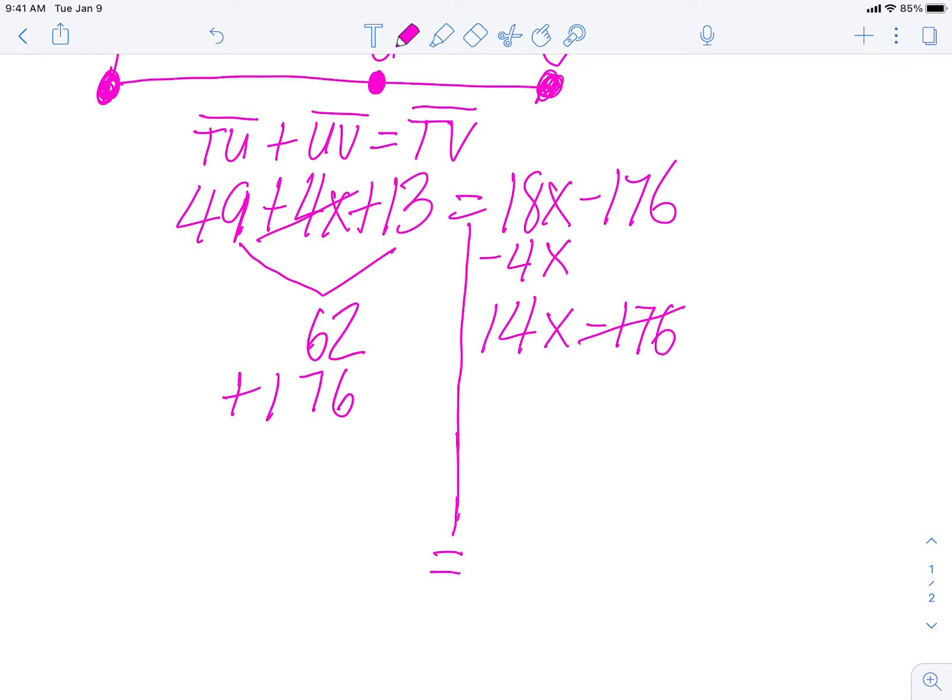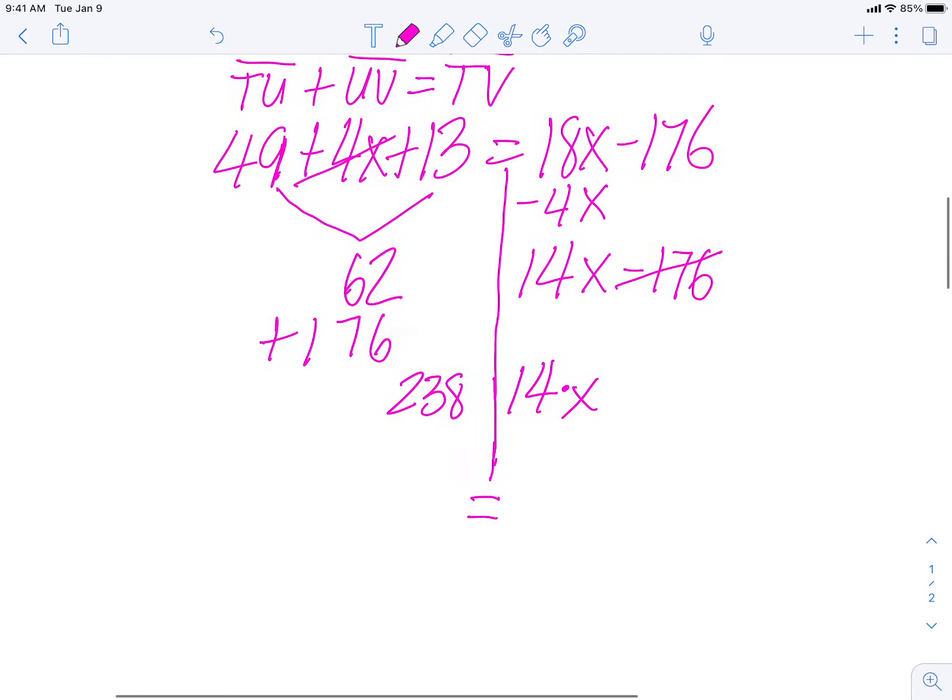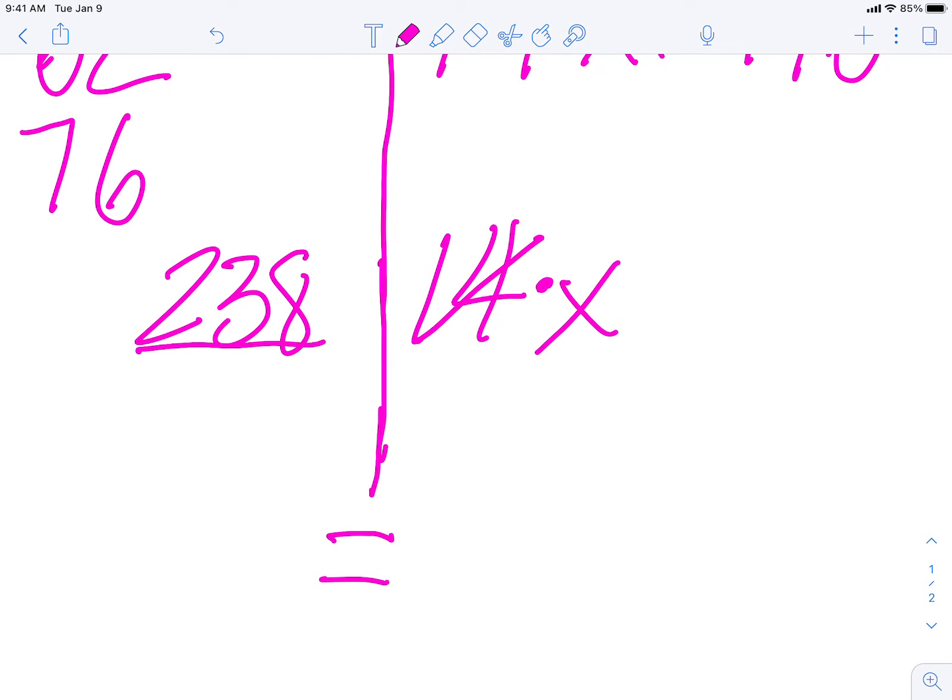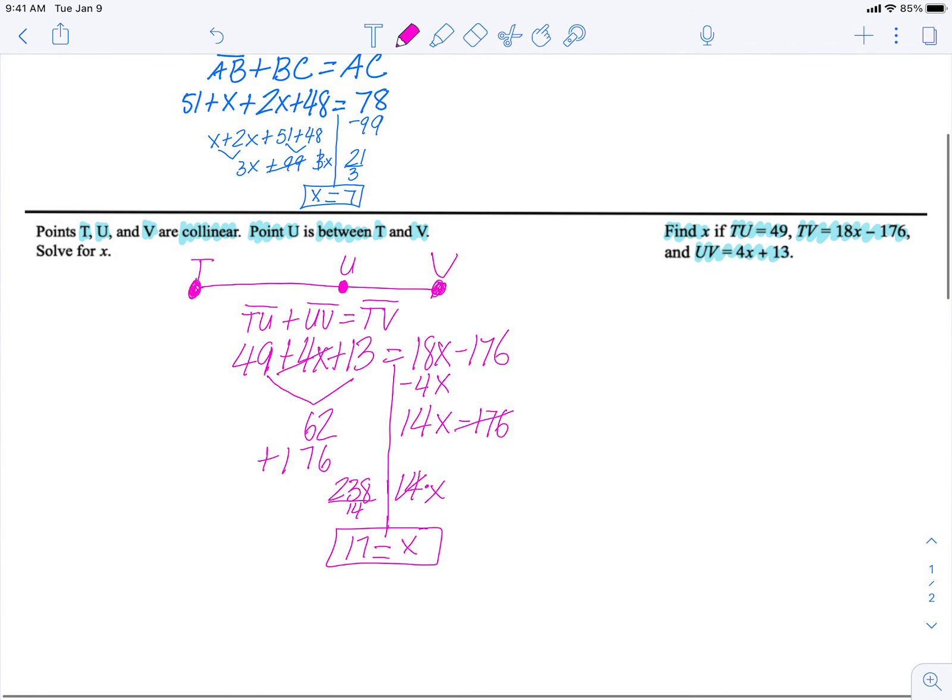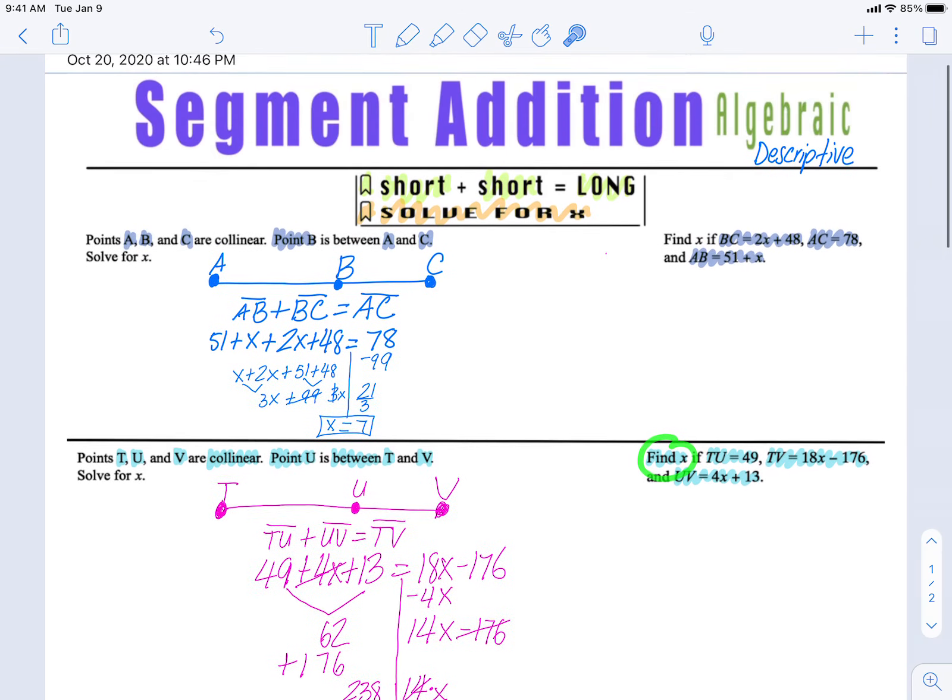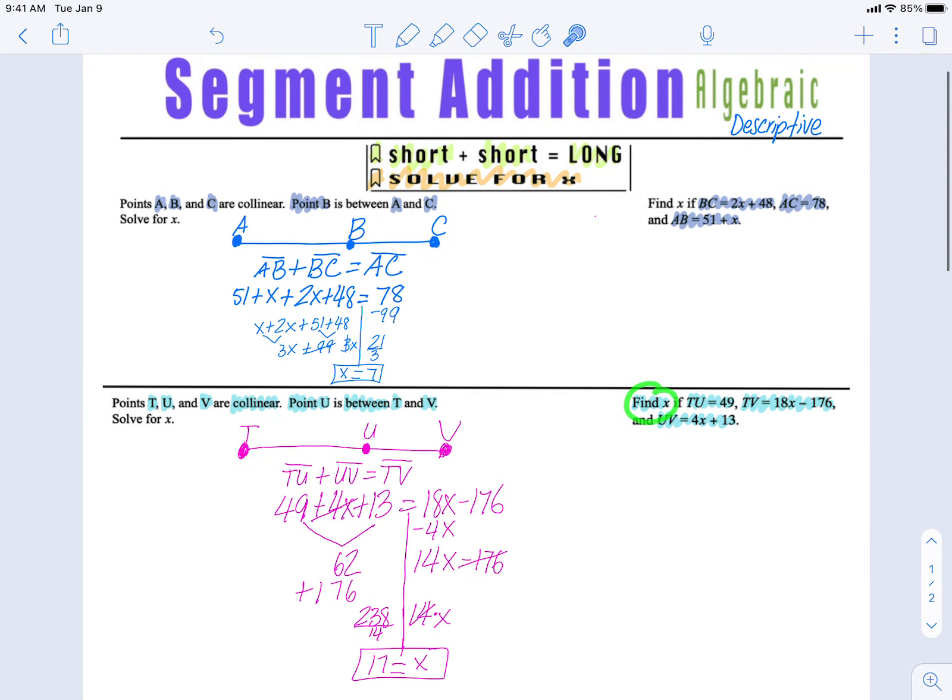So that gives me 238, and I still have 14 times x. So the opposite of multiplying by 14 is dividing by 14. So I'm left with x, and I use my trusty calculator here. 238 divided by 14 is equal to 17. And I have solved for x, and that was the goal. Find x. And there, ladies and gentlemen, we have the notes for video lesson for segment addition, algebraic, descriptive.